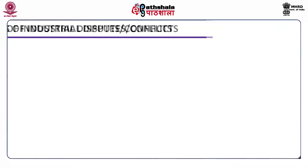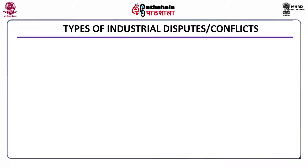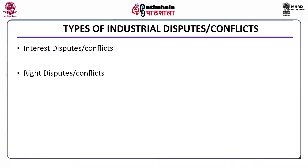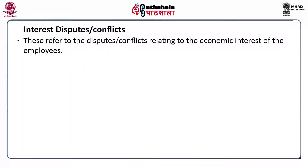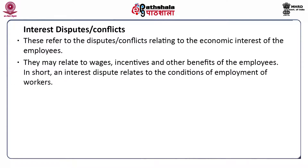Talking about the types of industrial disputes, there are two types of industrial conflicts. One is interest disputes and the second one is rights disputes. Interest disputes refer to disputes related to the economic interest of the employees. They may relate to wages, incentives, and other benefits of the employees. In short, an interest dispute relates to the conditions of employment of workers.